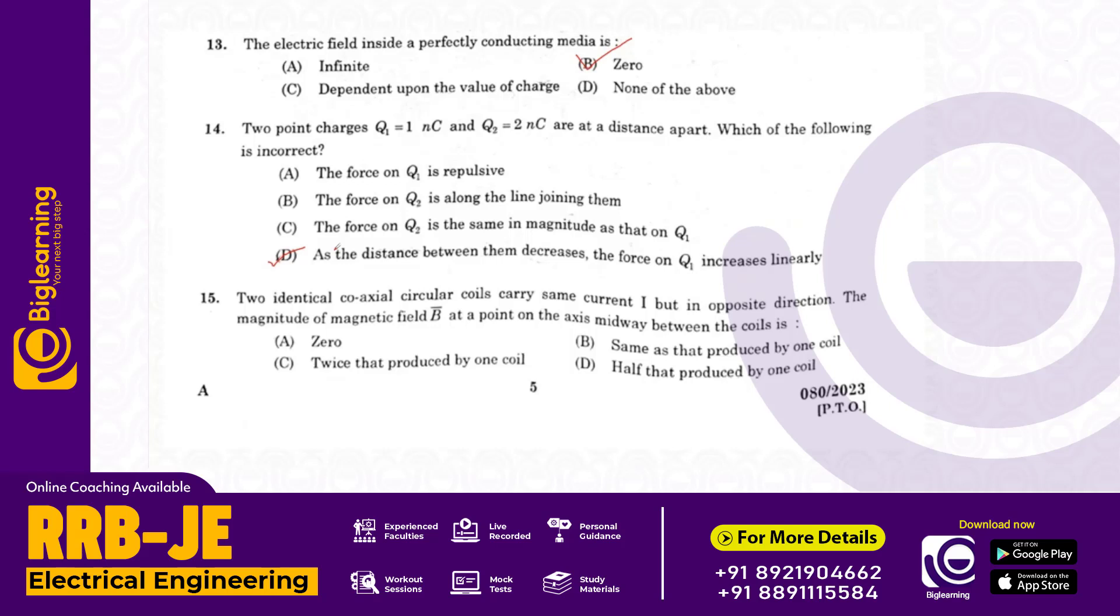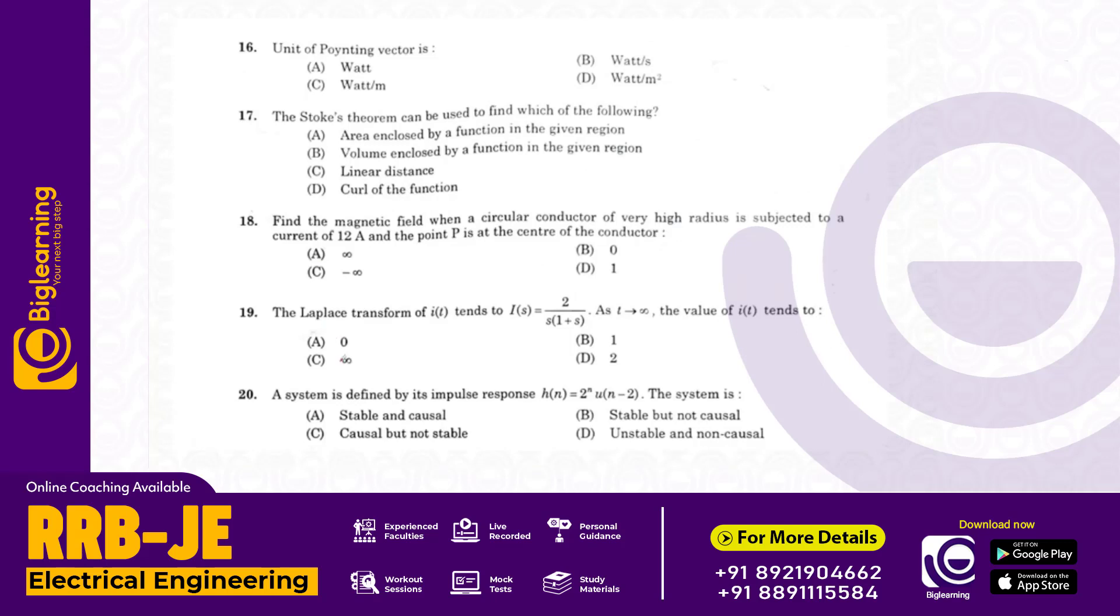Two identical coaxial circular coils carry the same current I but in opposite directions. The magnitude of magnetic field B at a point on the axis midway between the coils will be zero since the resultant at the central point is zero. Answer A.